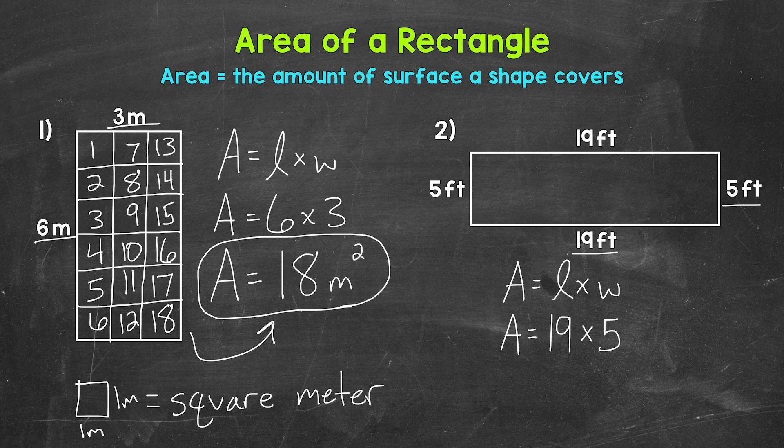it's a little different than number 1 because all 4 side lengths are written out. That doesn't mean we need all 4 side lengths. We still just need the length and width. We're not multiplying everything that's written out or given.